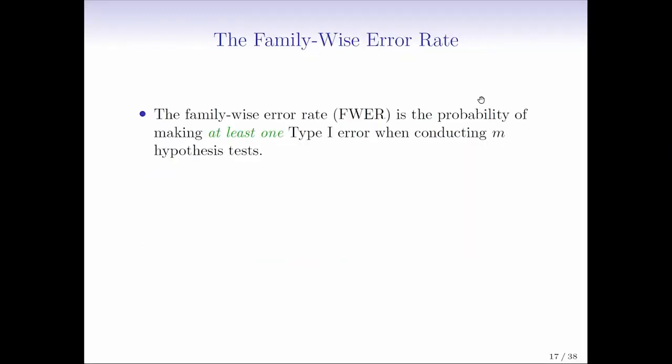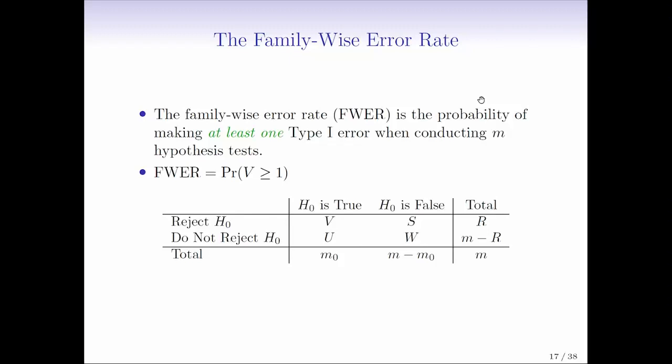All right, so then what's an approach that we can take to try to deal with this situation? We just discussed that if we perform enough of these hypothesis tests, we're almost certain to have some Type I errors. We don't want Type I errors. So, how can we try to control for the situation where we're doing a lot of these tests? And the most classical approach here is something called the family-wise error rate. And the family-wise error rate is just defined as the probability that we make at least one Type I error. So, if you think about it, if you have a low family-wise error rate, then you're saying that there's a low probability of making any Type I errors. Sounds great, right?